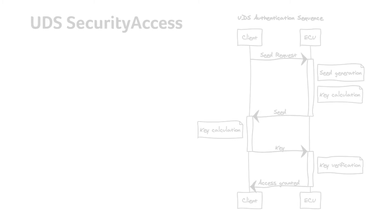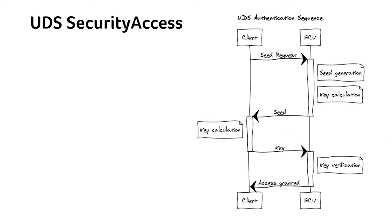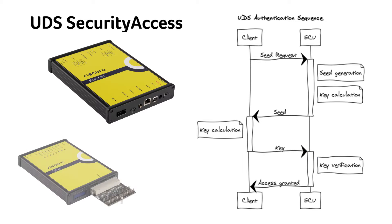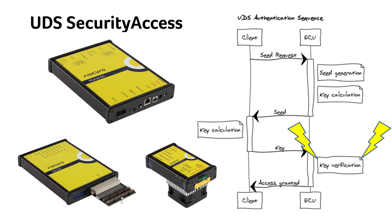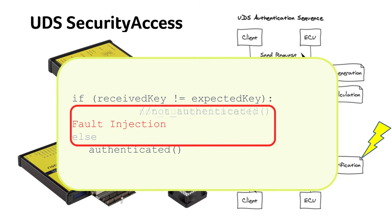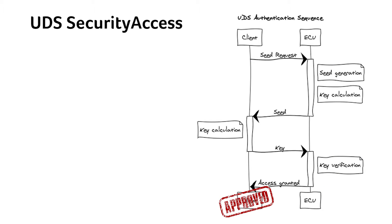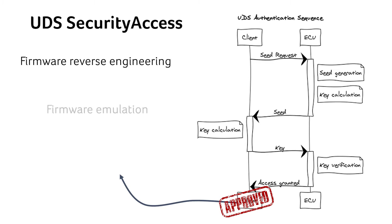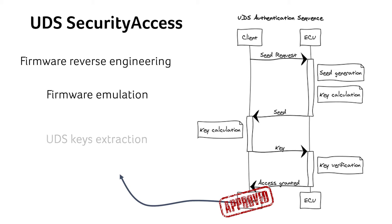In the next example, we will demonstrate how to bypass the security access using Riskure's Huracan, along with Spider and Glitch Amplifier 2 for driving the glitches. By glitching the authentication process, we can skip the key verification, get access, and perform privileged and protected UDS services. This allows for further attacks, such as firmware reverse engineering or emulation, or enabling the extraction of the vehicle's UDS keys and algorithms.